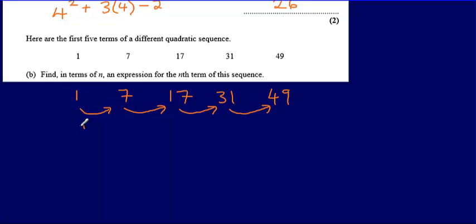So I can see that to get from the first term, I'm having to add on 6. Then I'm having to add on 10, 14, and then having to add on 18.